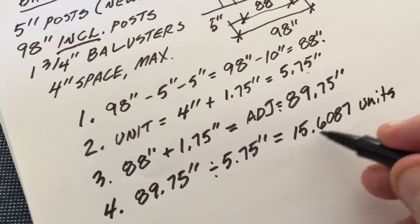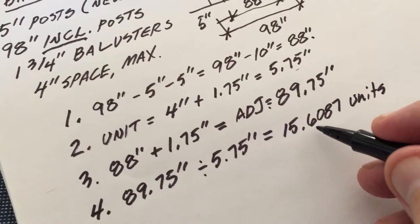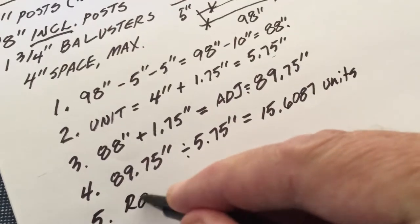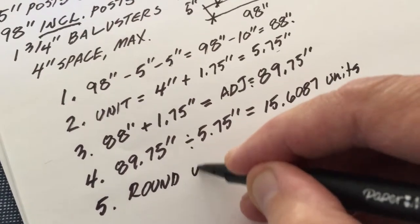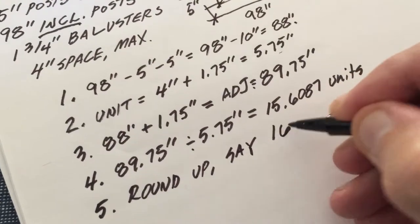Now I don't want to build an odd partial number of units, I want to build whole units. So step 5 says round up: say 16 units.